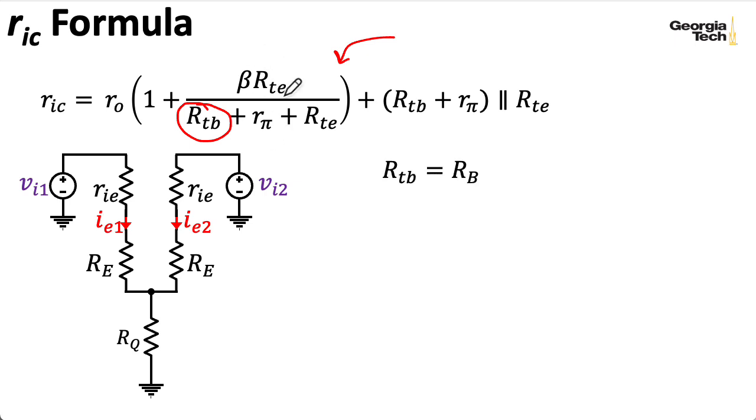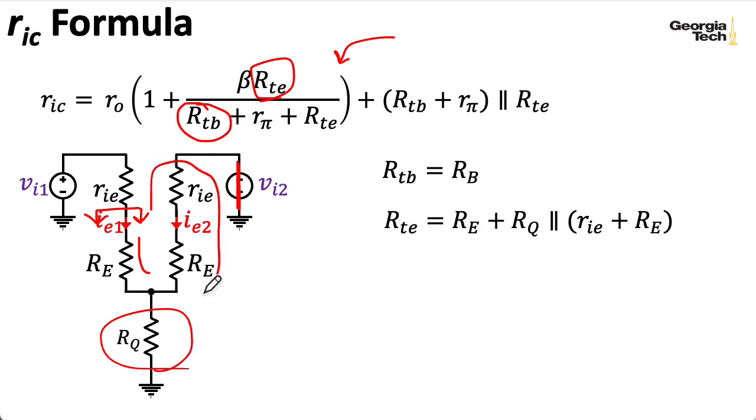I also need the small signal resistance looking out of the emitter. So let's talk about that for a second. So let's see, I would need to zero VI2 here, and then I would wind up with a series combination of RE with a parallel combination of RQ and RIE in series with RE, and we saw a similar expression earlier when we were computing the gain.